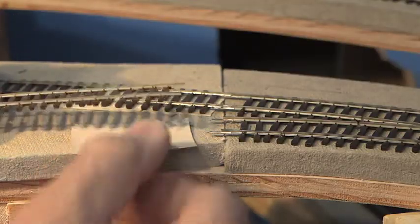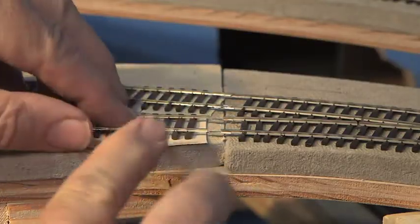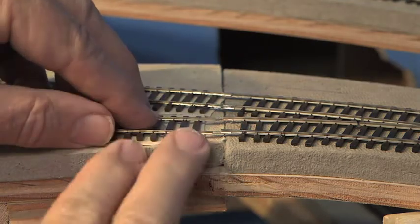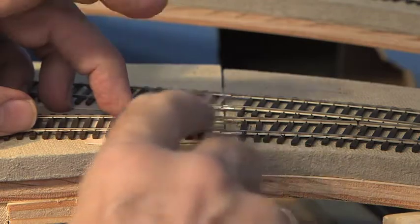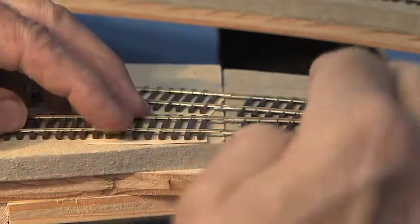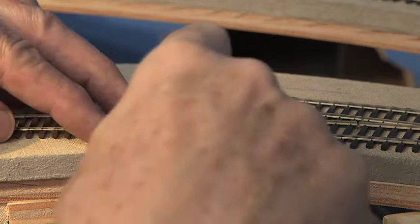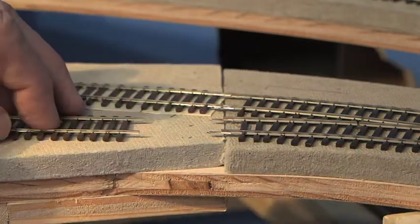We also need to do a little bit of shimming with a piece of a business card, and that just provides a little bit of a smoother transition so the rail doesn't have to dip down due to the thinner homosote here.